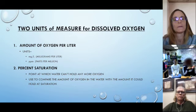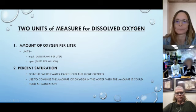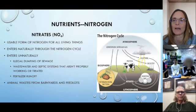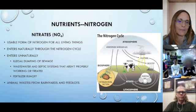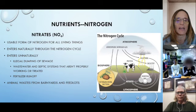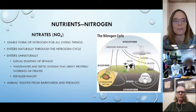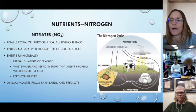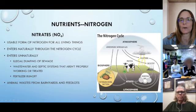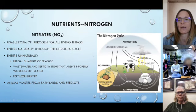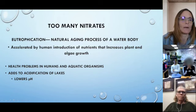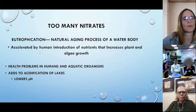Nutrients like nitrogen — nitrogen is naturally in the environment and is required for life. It enters naturally through the nitrogen cycle, but unnaturally it comes from sewage (animal or human), wastewater, septic systems, and fertilizer runoff. Nitrogen is a major fertilizer put on crop fields, and it's quite soluble in water, so it's easily picked up during runoff.